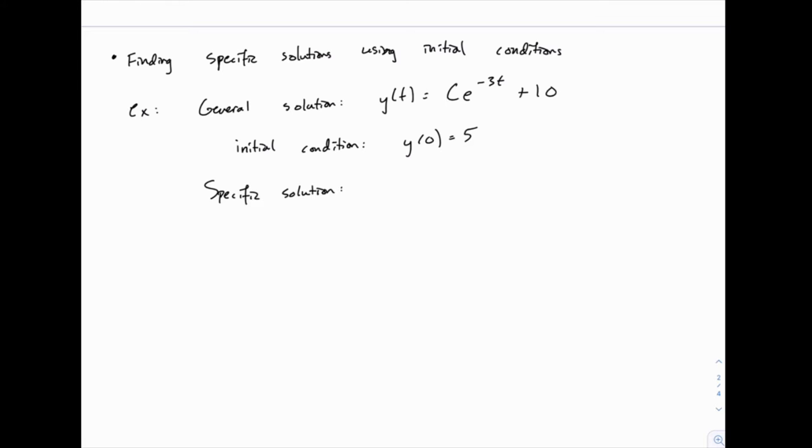So our general solution here is y equals c e to the negative 3t plus 10, and the initial condition is that y of 0 equals 5. All we do is plug in the 0 for t and the 5 for y.